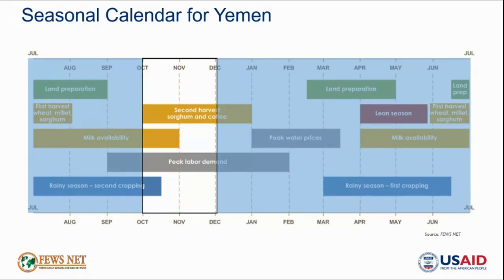In October, the second rainy season concluded with significantly above average rainfall, which resulted in flooding and localized crop damage in widespread areas of the country. The main harvest period of cereals and fruits is also ongoing now, providing rural households with some limited seasonal food and income.